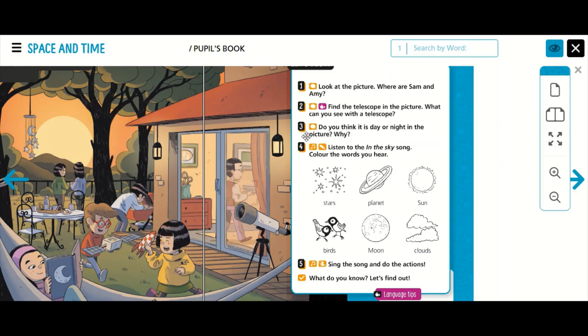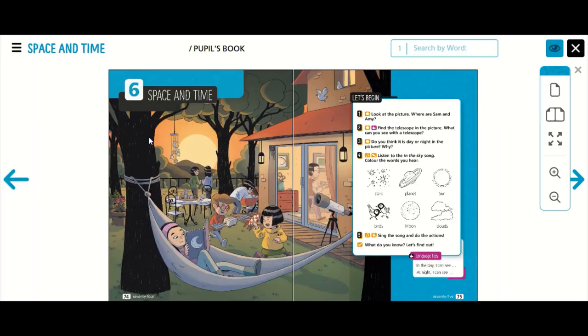Well, activity number 3. Do you think it is day or night in the picture? Why? Let's think about it. I can see the sun. Can you see the sun during the day or at night? We can see the sun during the day. Actually, this is the sunset. At night, we can see stars and we can see the moon, but not the sun. So, I would say that it's daytime.